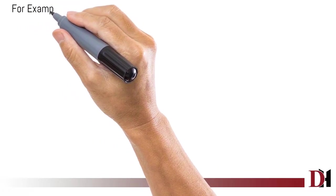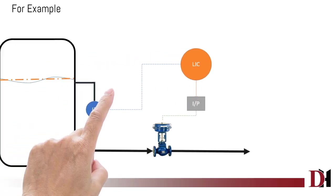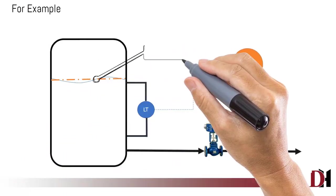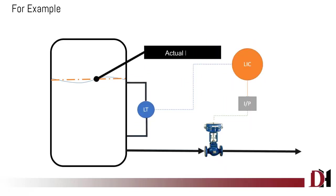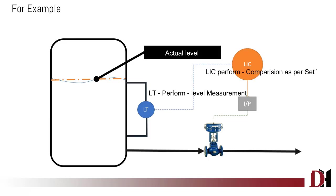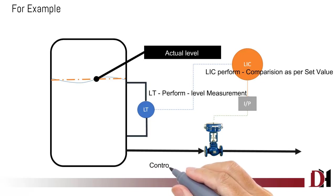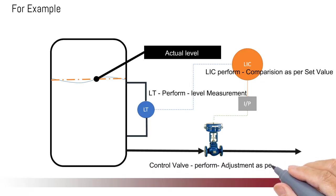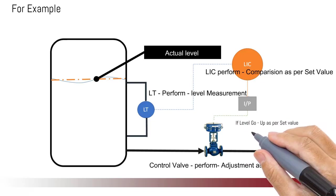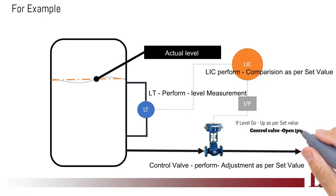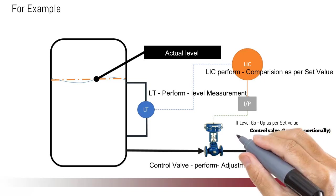For example, if we need to maintain a liquid level as per a set point, first we measure the liquid level, then we compare it against the set point, and after comparison we adjust accordingly. The control valve will open or close — when the level goes above the set point, the control valve opens and the level goes down.